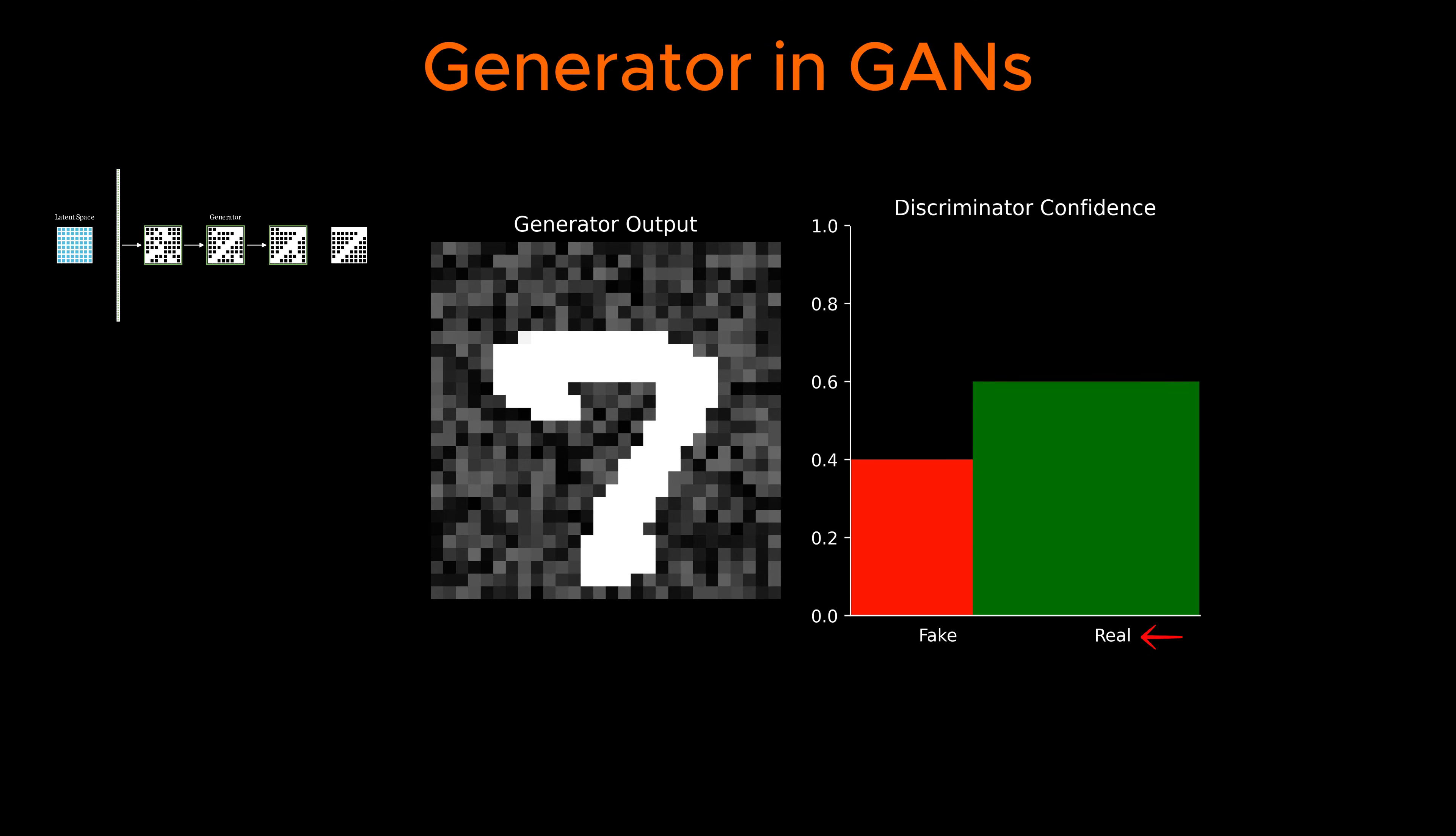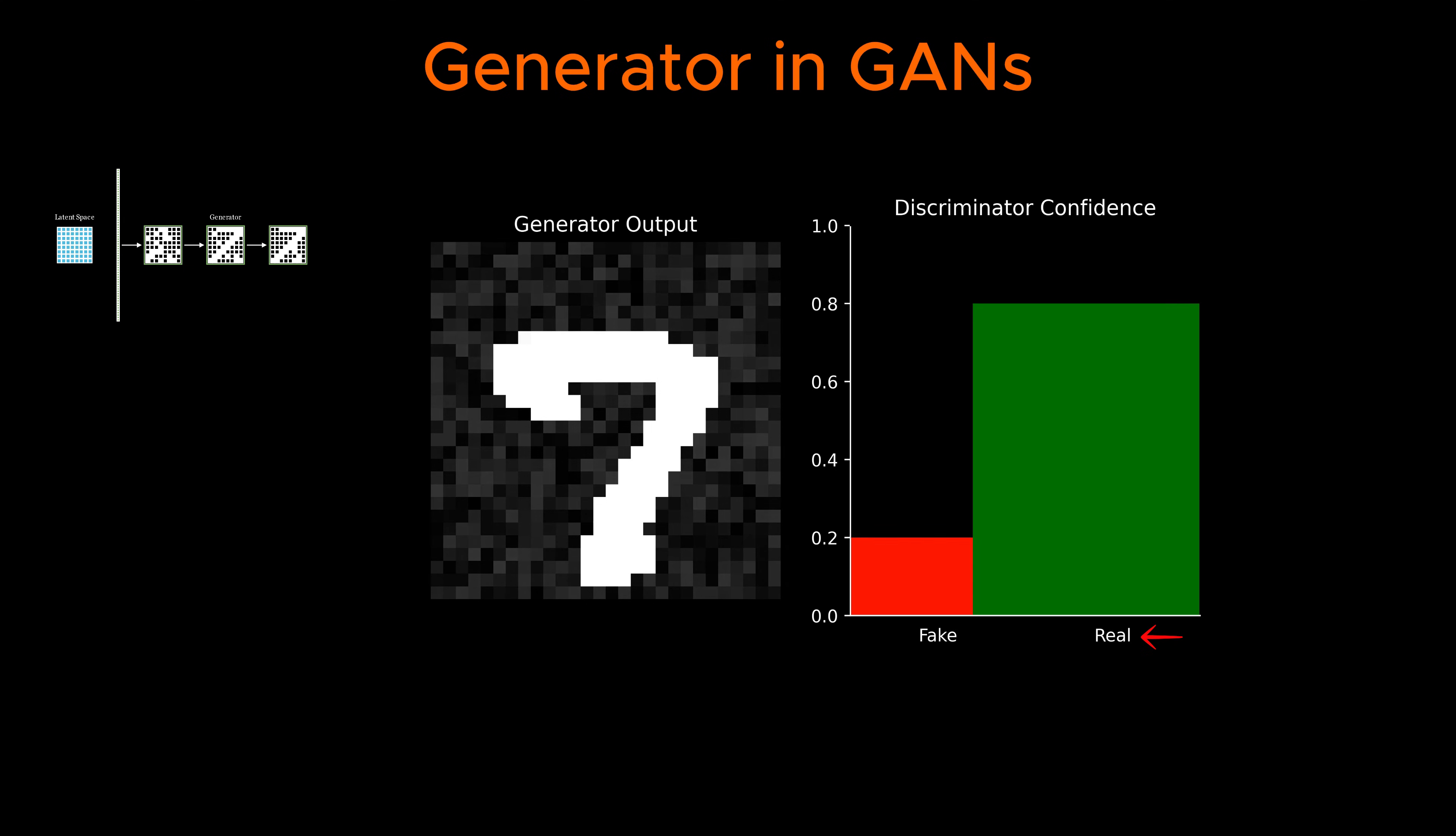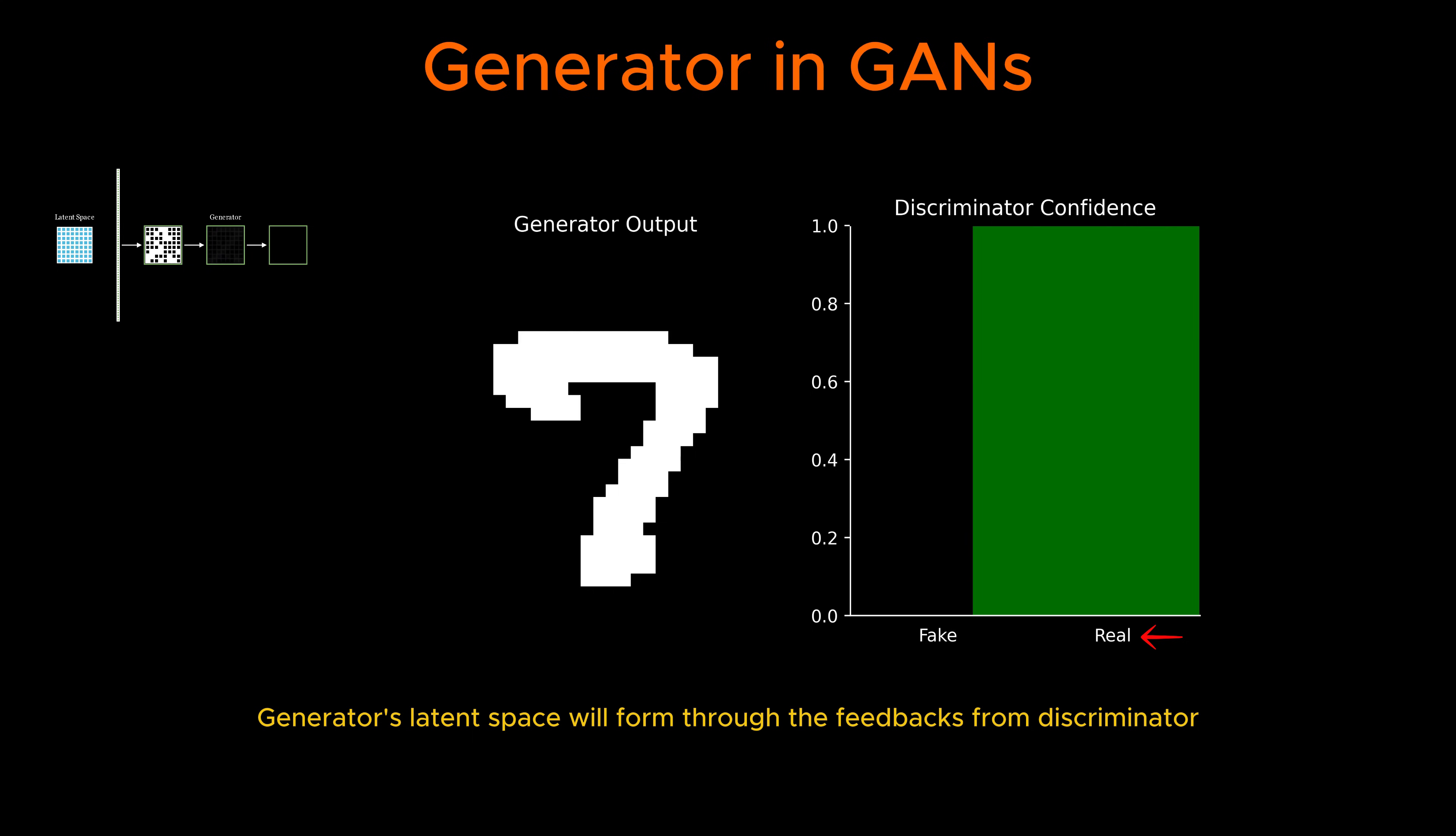If it correctly identifies a generated image as fake, the generator receives feedback and adjusts its parameters to produce more realistic images. Over multiple training iterations, this adversarial process leads the generator to capture meaningful patterns from the training data, mapping different regions of the latent space to different kinds of images.